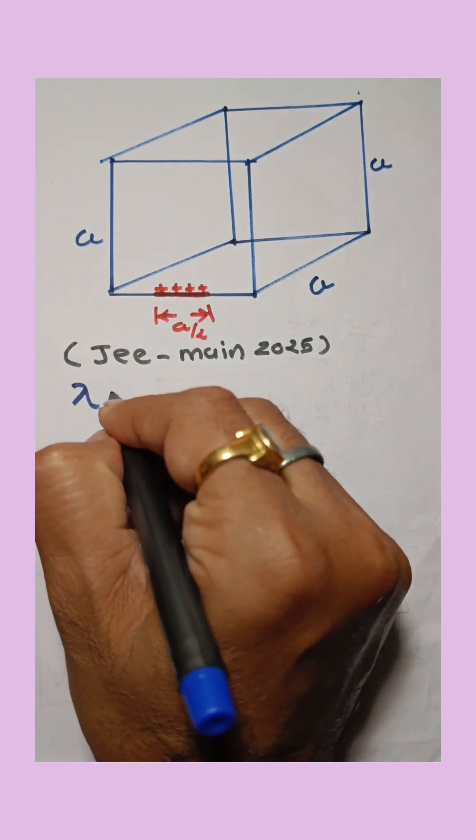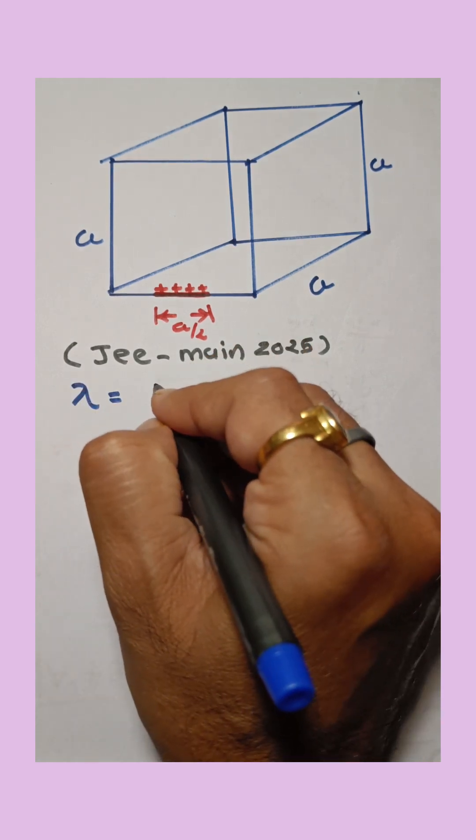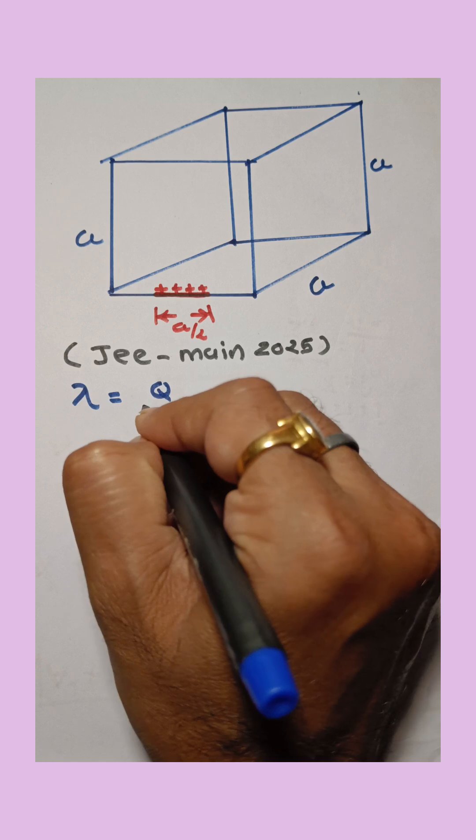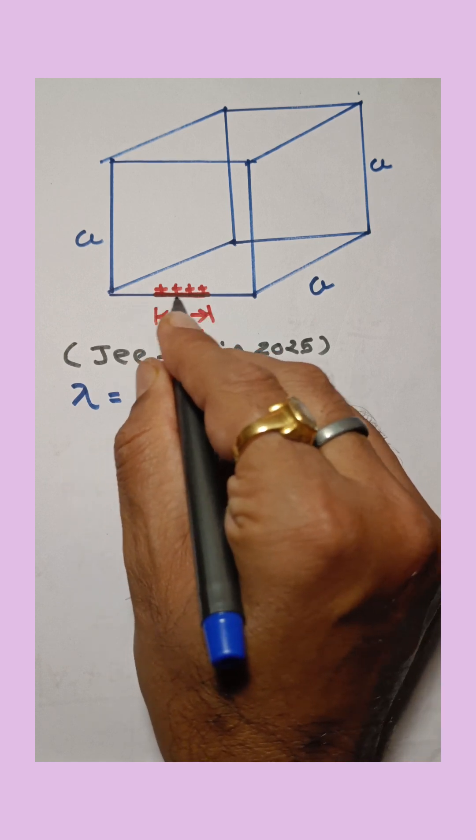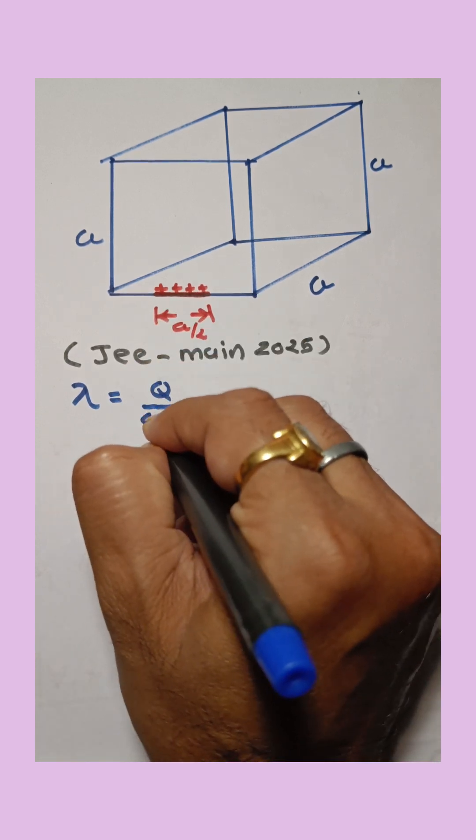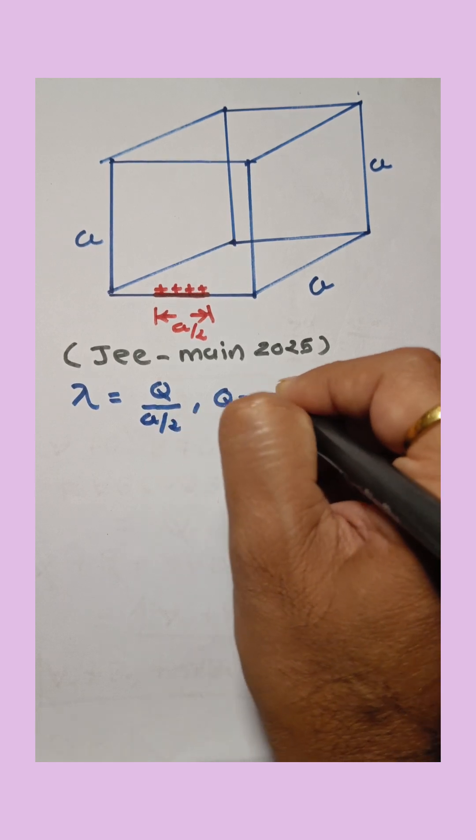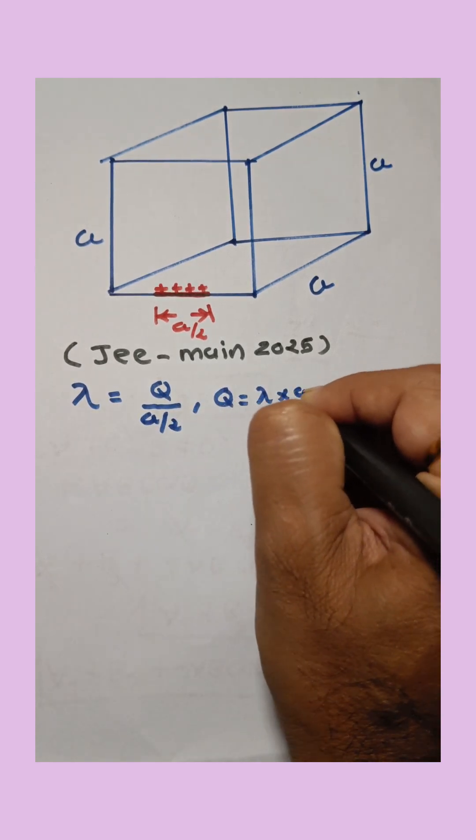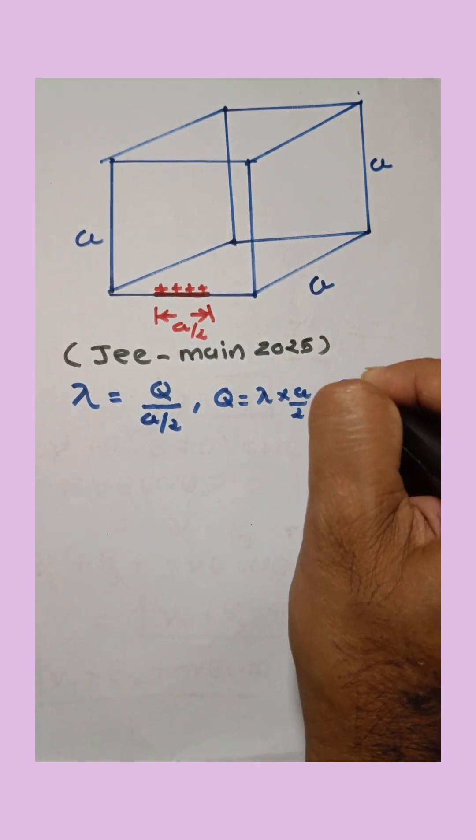Now see here, lambda is the linear charge density equal to charge upon length. Suppose total charge on the wire is Q and length of wire is a/2. So Q equals lambda times a/2, equation number 1.